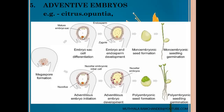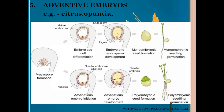These embryos developed from nucellus or integument layers can also develop into plantlets. In adventive polyembryony, true fertilization occurs in Citrus and Opuntia, but the true embryo disappears or degenerates. From integument cells or nucellus cells, more true embryos — not false embryos — are developed, and they also develop into plantlets. From all these polyembryonies, only one embryo ultimately develops into a mature plantlet. These are the main types of polyembryony in angiosperms.